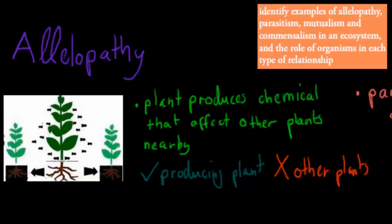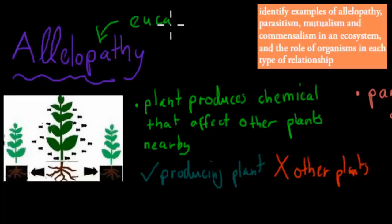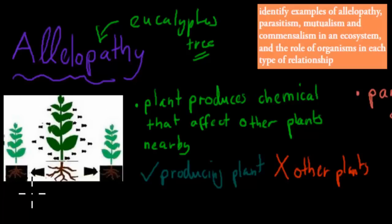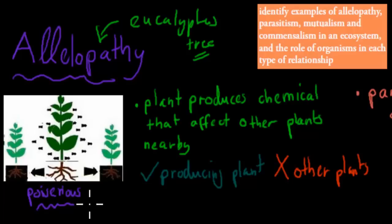The first one is allelopathy. This is actually a quite interesting one. The example you can think of is the eucalyptus tree. Some eucalyptus trees can produce poisons or chemicals — most of them are poisonous, though there are some which are beneficial for other plants. They have their poison in their leaves. I'll draw a leaf here — this leaf has chemicals, shown by these purple dots.